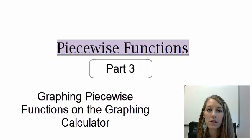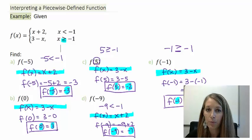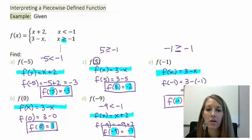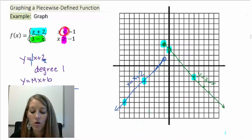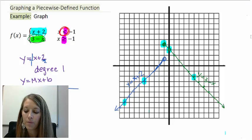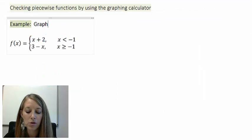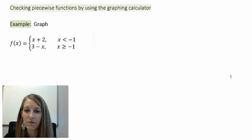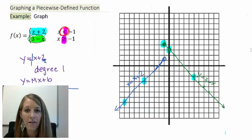Moving on with piecewise functions. So far we've given an example, interpreted it by substituting x values into the appropriate piece, and graphed it by hand — graphing the whole equation then keeping only the part on the corresponding interval. Now, we want to graph it using the graphing calculator to double check the work from the last video and confirm the graph is appropriate.